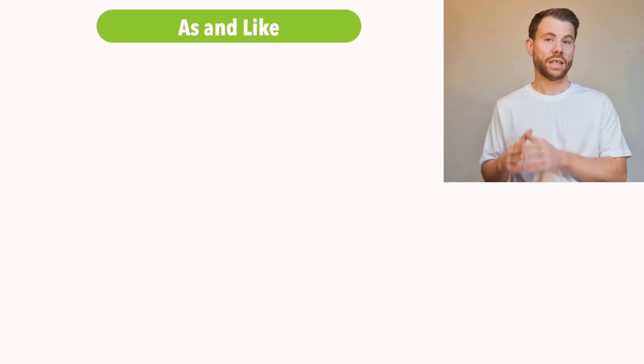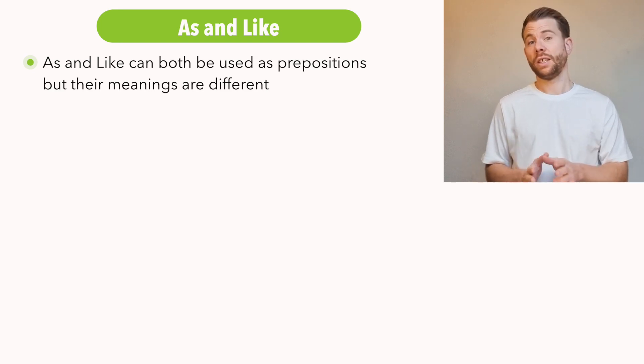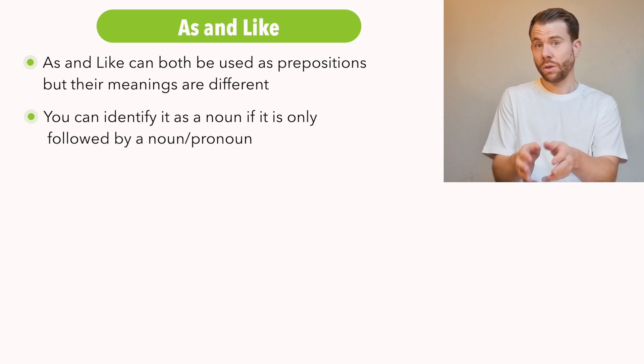First things first. As and like can both be prepositions. When they're prepositions, they have different meanings to each other. So you can identify that it's a preposition when it's followed just by a noun. There's no verb. Directly after as or like, you just have a noun or a pronoun.